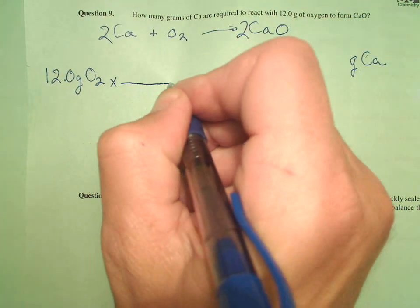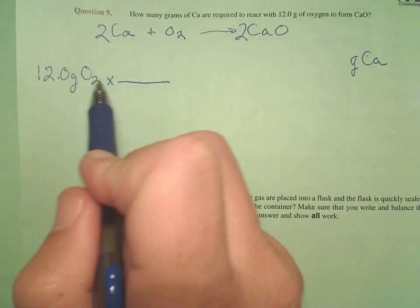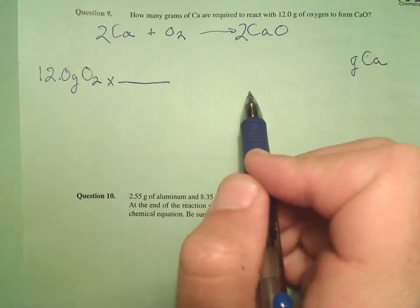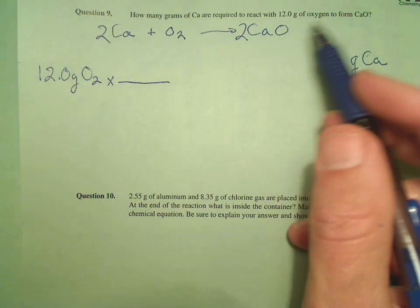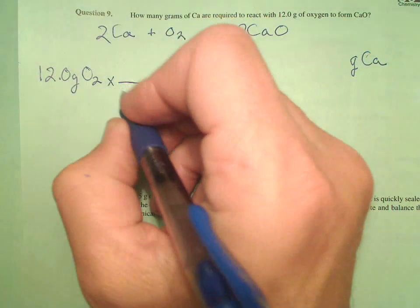Remember my general scheme for all stoichiometry problems: get it into moles, whatever I start with, then use a mole to mole ratio, then get it into whatever units I need for the end. So my first job is to get this into moles.